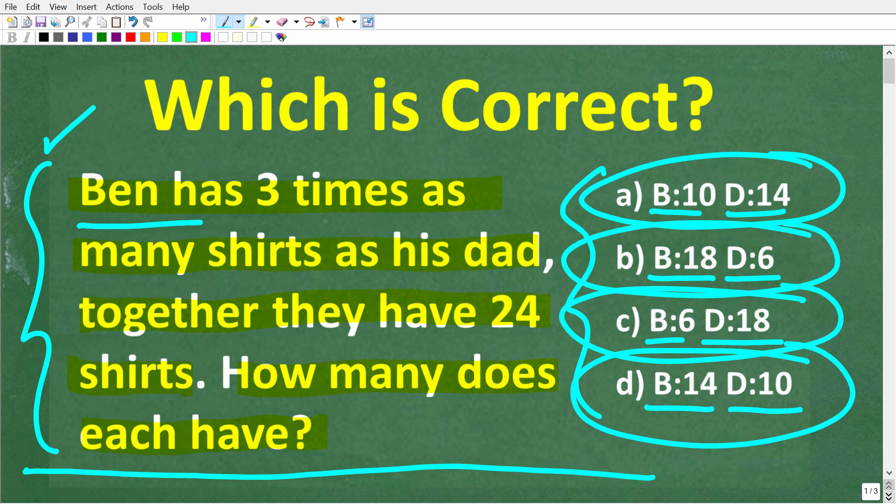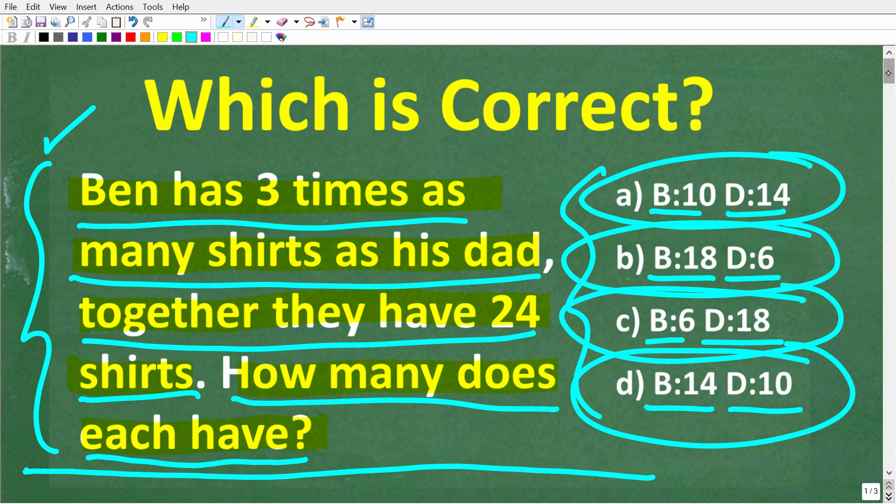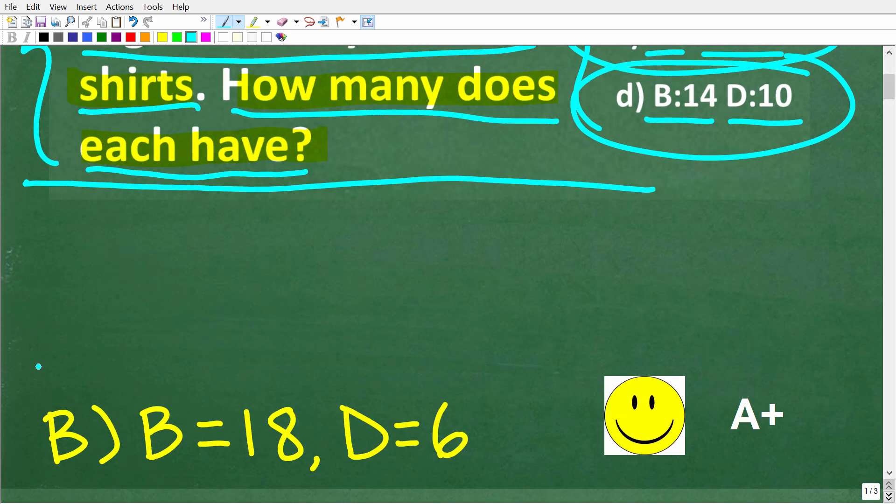One more time, Ben has 3 times as many shirts as his dad. Together they have 24 shirts. How many shirts does each have? Let's take a look at the answer. The correct solution here is B.